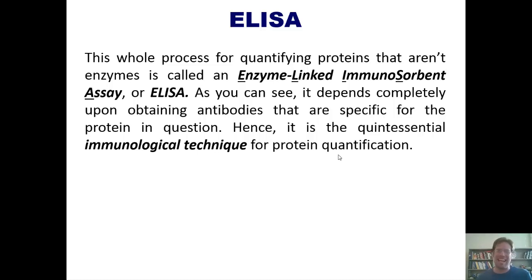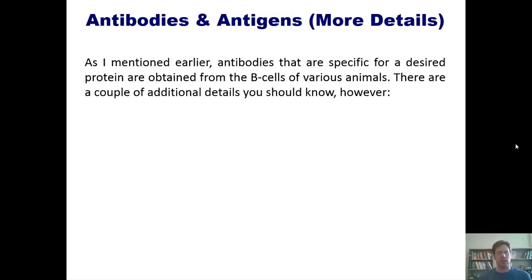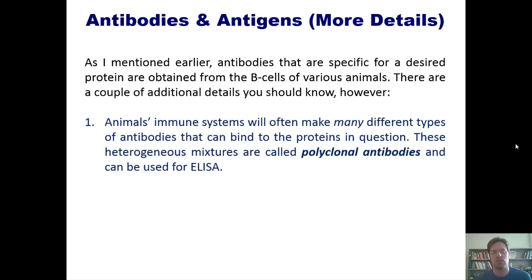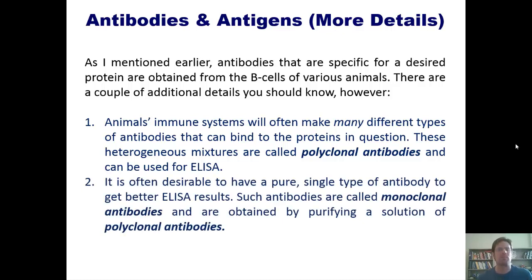I now want to give you more details about antibodies and antigens. Foremost, as I mentioned earlier, actually, in lecture with you, antibodies that are specific for a desired protein are obtained from the B cells of various animals. There are a couple of additional details, however, that you should know. First, animals' immune systems will often make many different types of antibodies that can bind to the proteins in question. These heterogeneous mixtures of multiple antibodies that all have the ability to bind to the protein that you've injected into the animal are called polyclonal antibodies and can be used for ELISA. Second, it's often desirable to have a pure, single type of antibody to get better ELISA results. Such antibodies are called monoclonal antibodies and are obtained by purifying a solution of polyclonal antibodies.